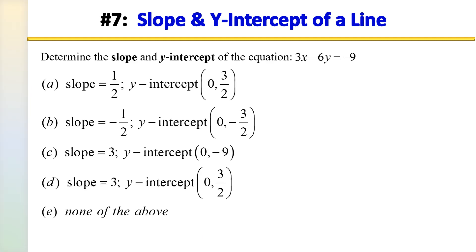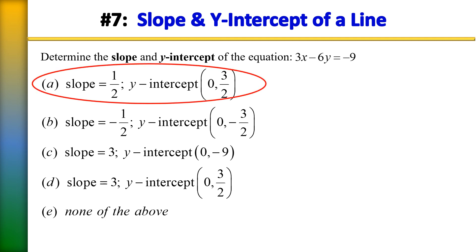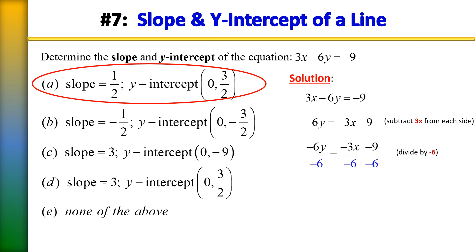Number 7: determine the slope and y-intercept of the equation 3x minus 6y equals negative 9. The correct answer is choice A. Notice the given equation is in standard form, so it needs to be rewritten in slope-intercept form. Subtract 3x from each side, then divide by negative 6, and you get y equals 1 half x plus 3 over 2, which confirms the answer choice.